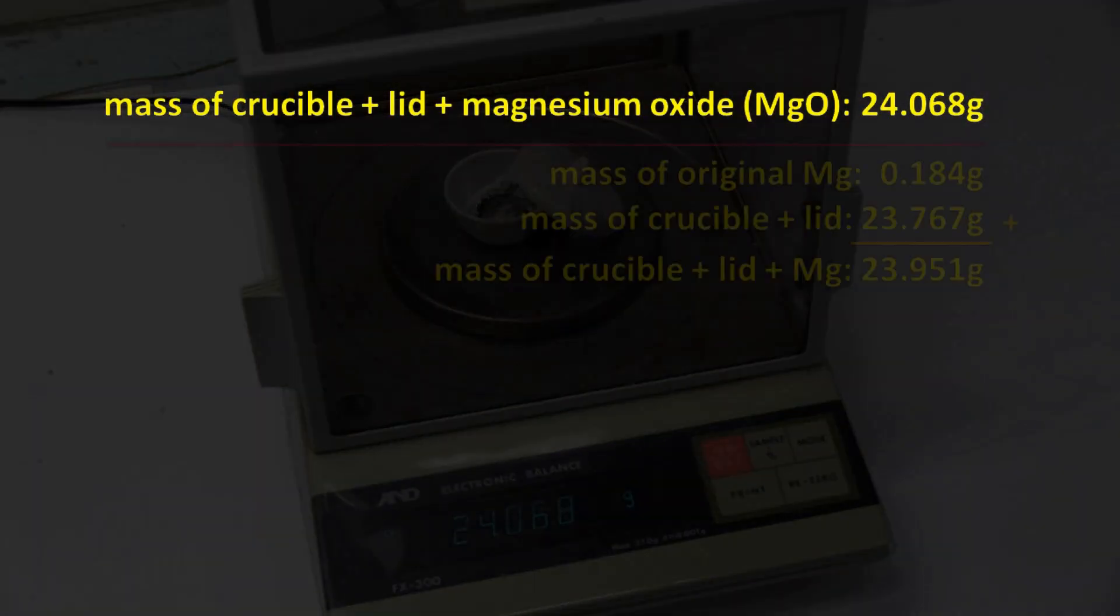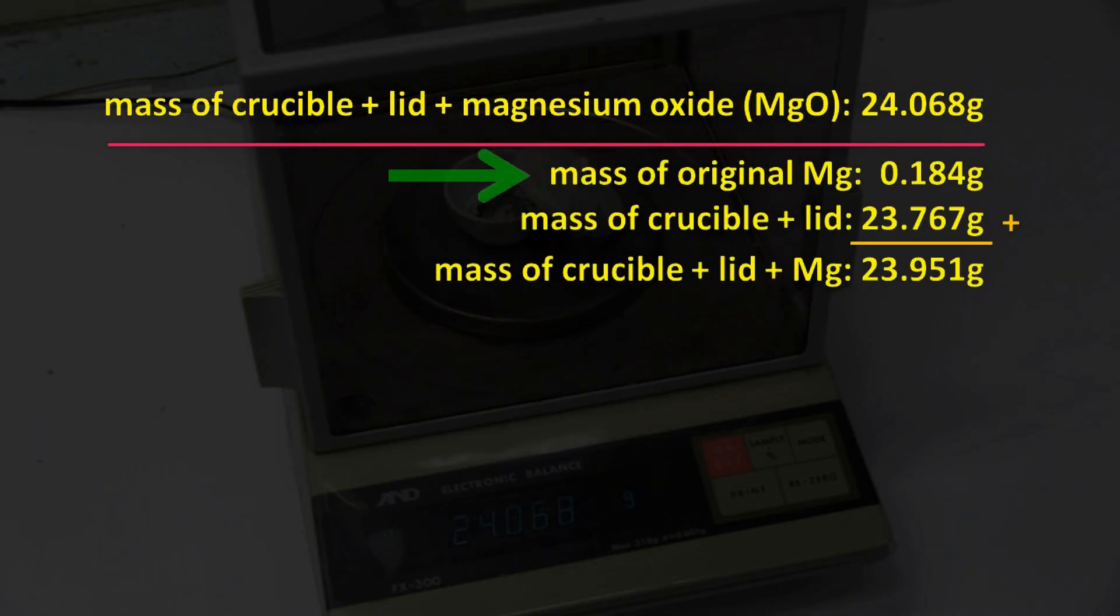Let's now display all of our data, including the mass of the original piece of magnesium, the mass of the crucible and its lid, and the combined mass of these three things, and do a few calculations to make sense of all these numbers.